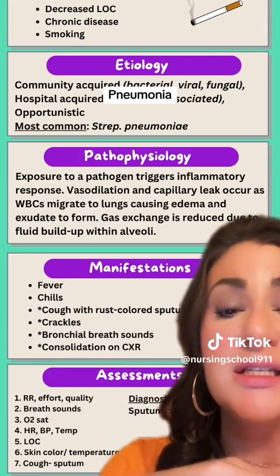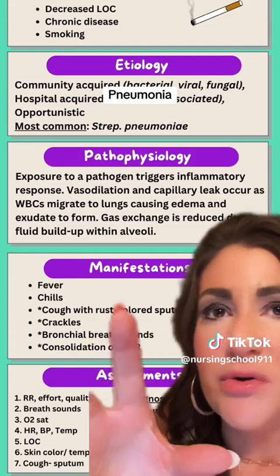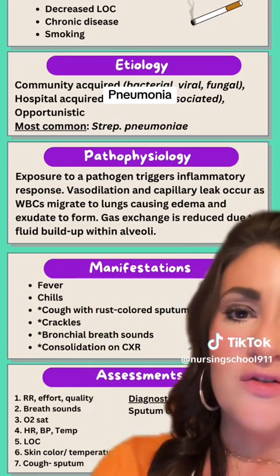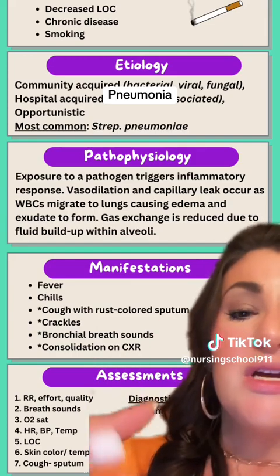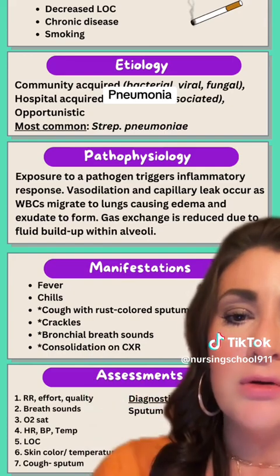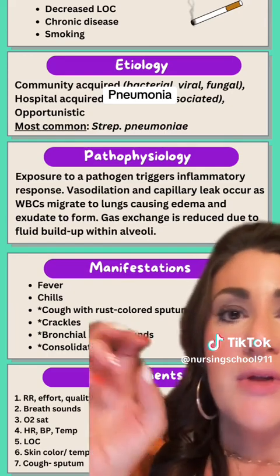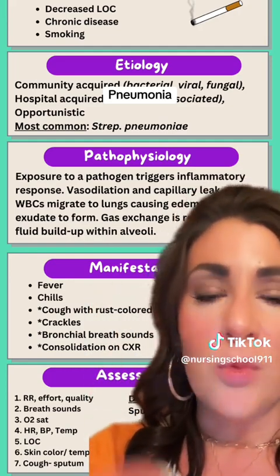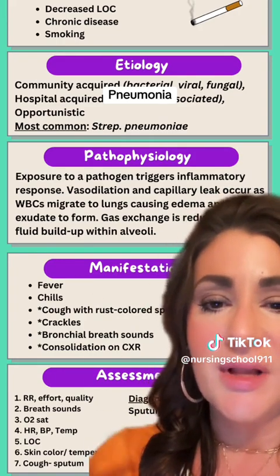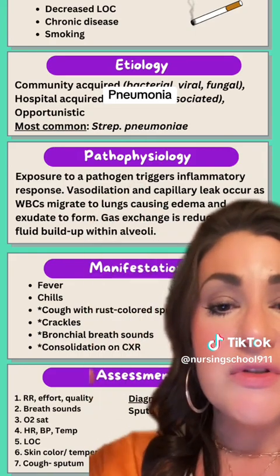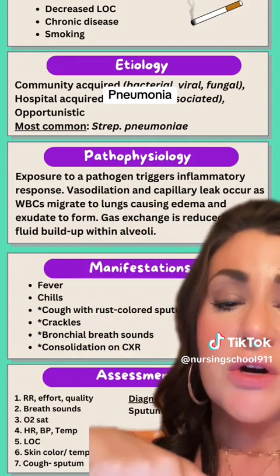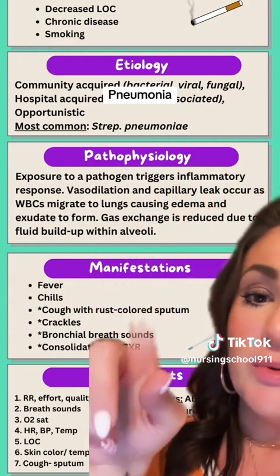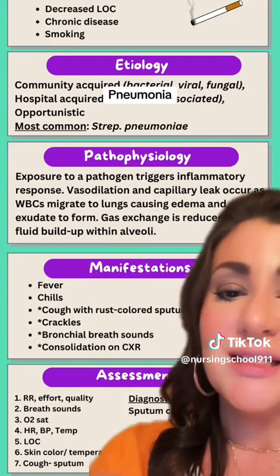Exudate just kind of consists of fluid, white blood cells, some proteins. When we're thinking about exudate, it always goes along with some kind of infective process or infection. And then obviously because of the fluid buildup within the alveoli, gas exchange is then impaired. The alveoli are those tiny little air sacs at the very end of our airway — that is where gas exchange takes place, where oxygen leaves the alveoli and enters the blood, and where CO2 leaves the blood and enters the alveoli to be exhaled. When all this fluid builds up within the alveoli, gas exchange is then impaired.